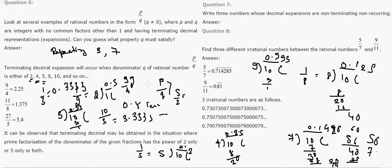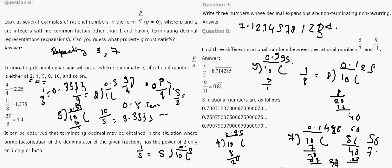Question 7: Write 3 numbers whose decimal expansions are non-terminating and non-recurring. You can take any value that is non-terminating and non-repeating. For example: 11.12345789... (no repeating pattern), or 835678357.3214124578... — consider any number where the decimal digits do not repeat.